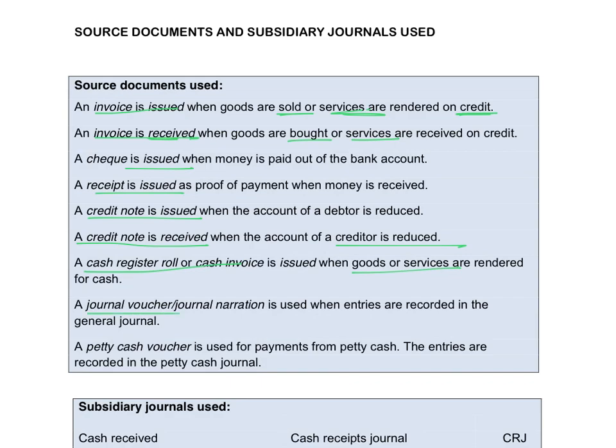A journal voucher or journal narration is used when entries are recorded in the general journal. Any entry that doesn't fit into one of the other categories will be recorded in the general journal. We don't receive a source document for this transaction, so we write a little sentence called a journal narration, or you can issue journal vouchers as proof for the transaction.